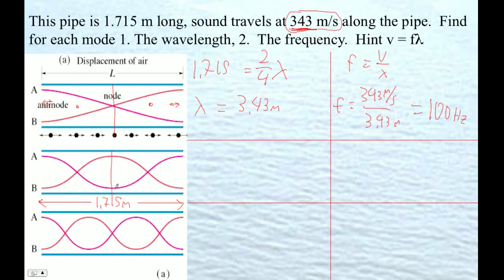Now, in this one here, we've got four-quarter wavelengths. Okay, so now 1.715 meters is four-quarter wavelengths, so therefore the wavelength is 1.715 meters.